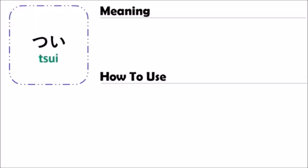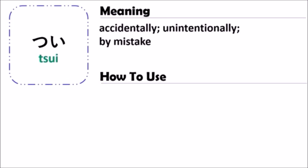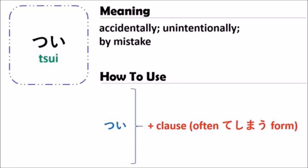We need to learn about the grammar of つい. つい means 'accidentally,' 'unintentionally,' or 'by mistake' in Japanese. You should begin with the grammar of つい, and after that you follow it with some clause. Sometimes it takes the form of the て-form.